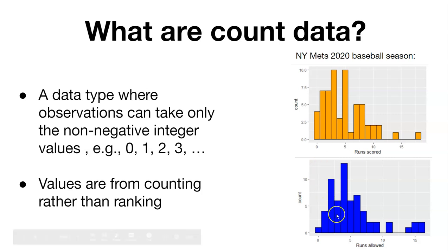In contrast, the number of runs allowed by the Mets are shown here. It looks like the most they allowed was four, but you can see it's a shifted distribution. The New York Mets had a losing season in 2020, and this distribution is shifted off to the right. The Mets allowed more runs than they scored, which generally indicates a losing baseball team.